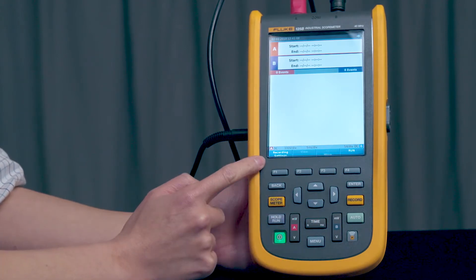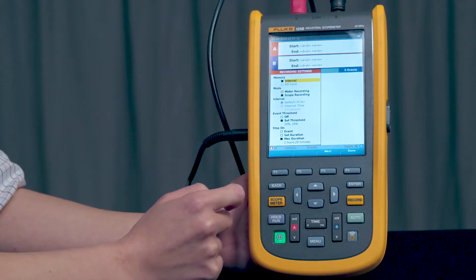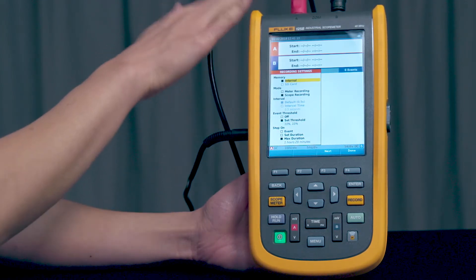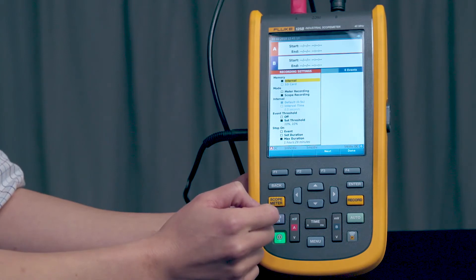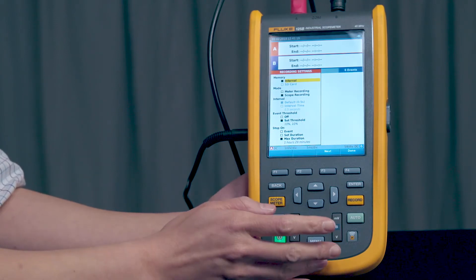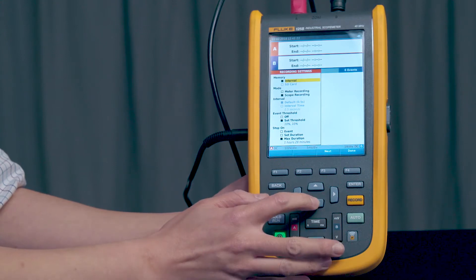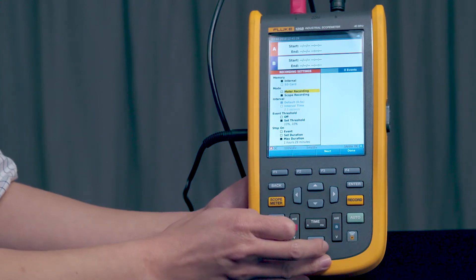Let's set our recording settings by pressing F1. Your first selection will be for the memory. You can either use the onboard or internal memory. Or if you have a micro SD card, you can insert it into the instrument and you can select that. In this case, we don't have an SD card selected. So we'll leave it at internal memory.